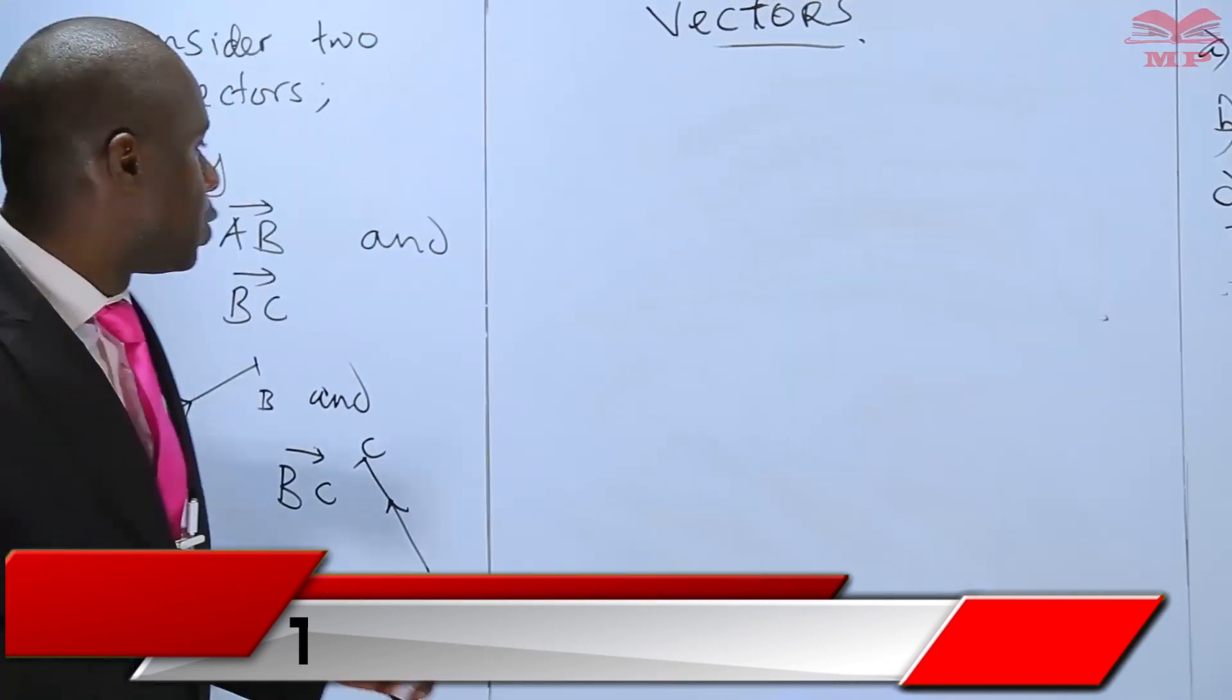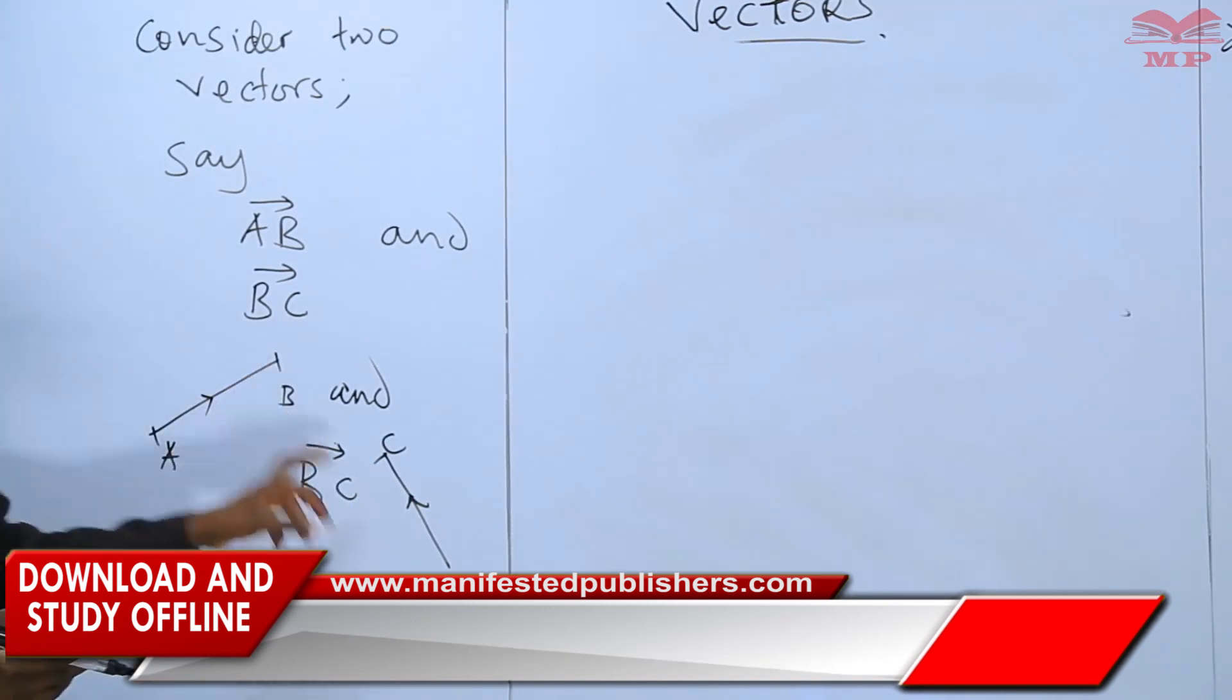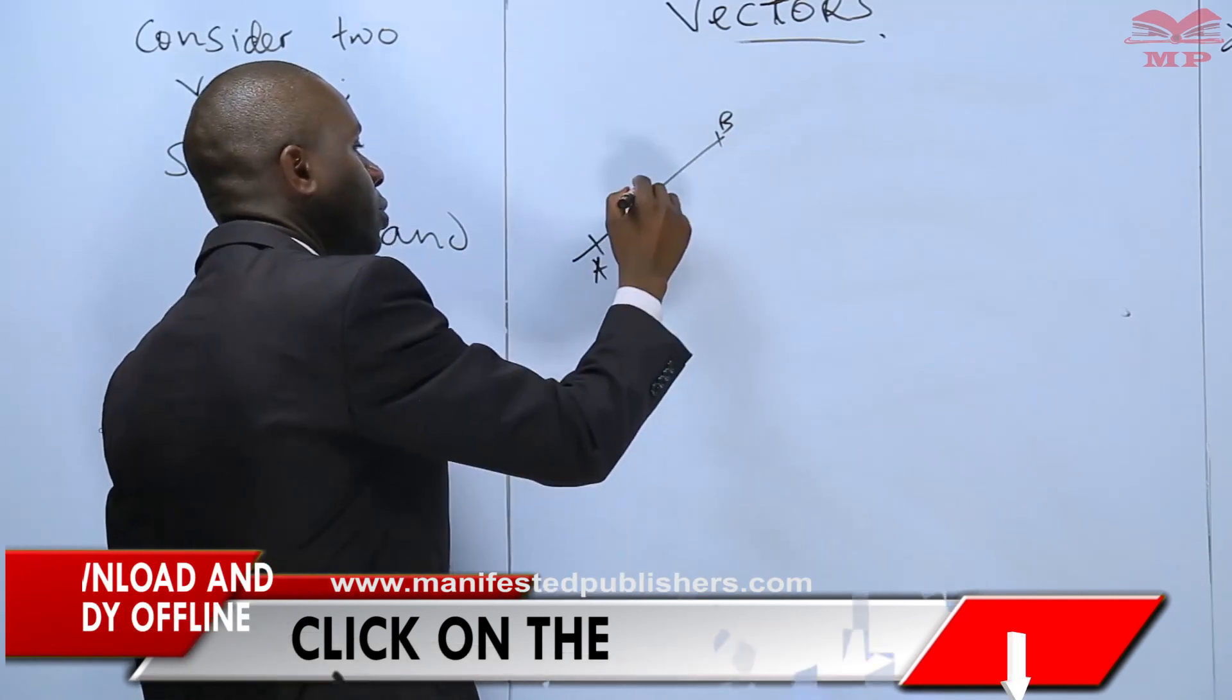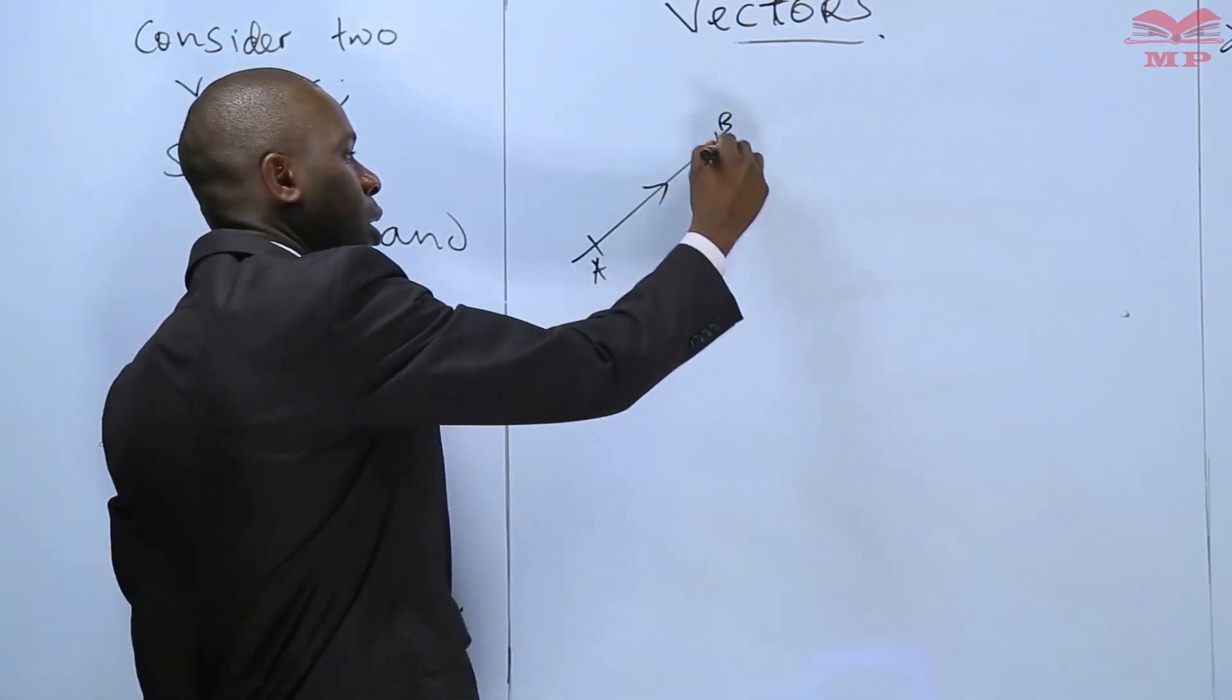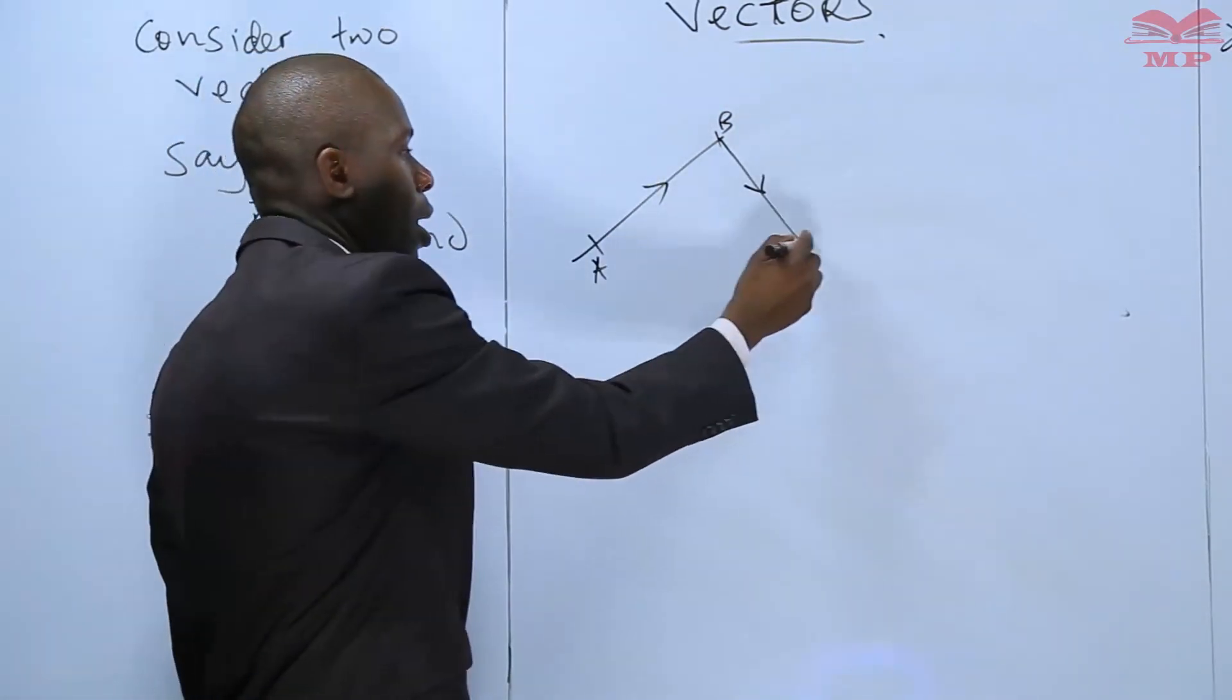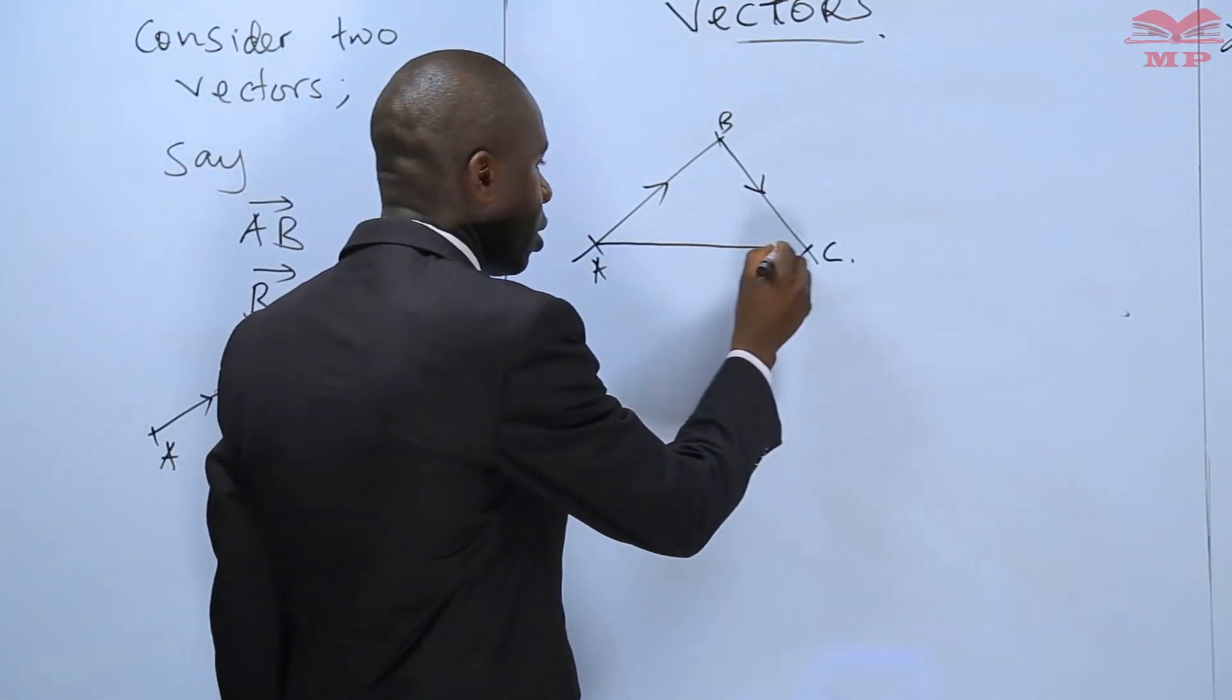Using these two vectors, AB written here and BC, we can join them and join the two parts B and B in each instance. So taking AB in that direction, we can join BC to it. BC can be drawn so the direction here was from B to C. We'll still show that direction that way up to a point C. From this, we can join A to C so that we have a triangle that way.